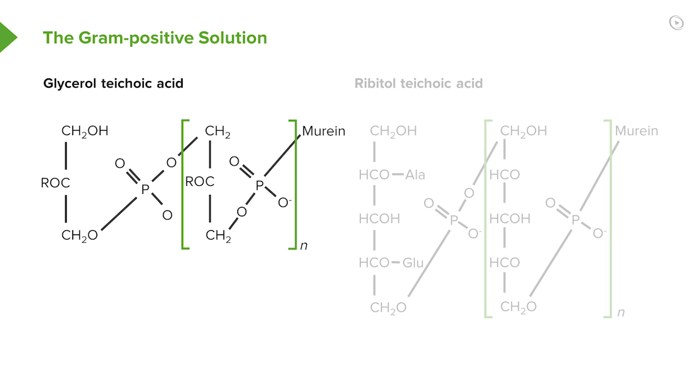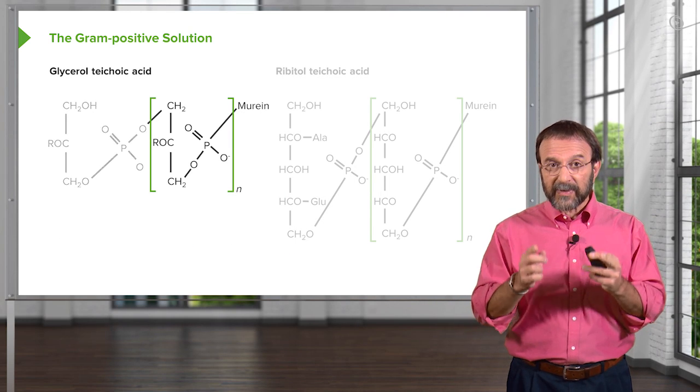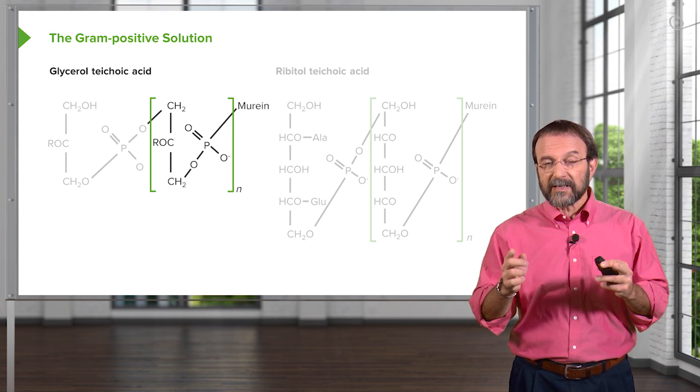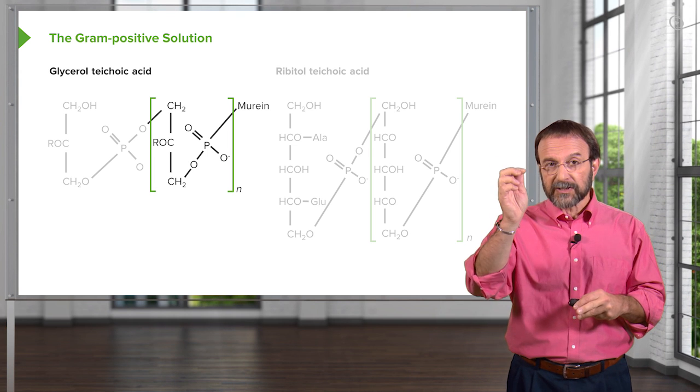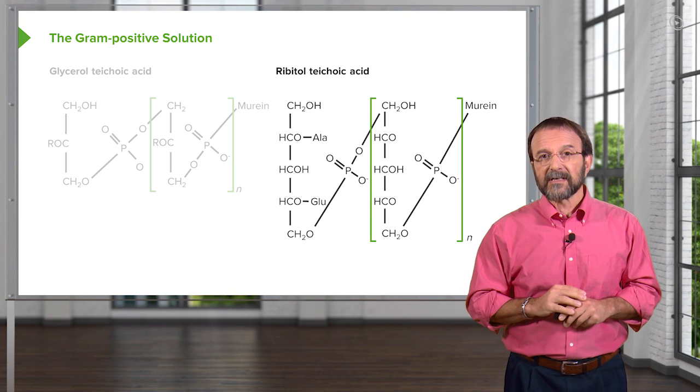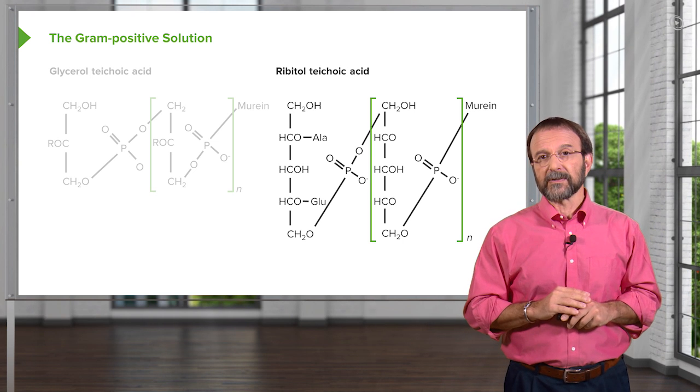These are the components of these teichoic acids. On the left is glycerol teichoic acid. In the bracket is the basic subunit, the glycerol. And then that is repeated over and over to make the long chain. And they're linked by phosphodiester bonds. On the right is ribitol teichoic acid. It's a different sugar alcohol. It happens to be a bit longer.